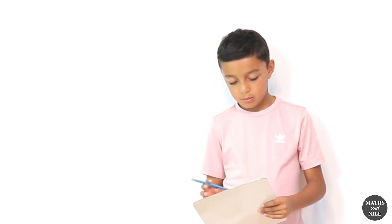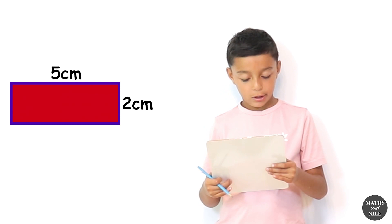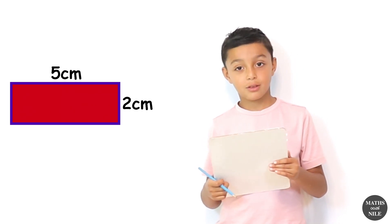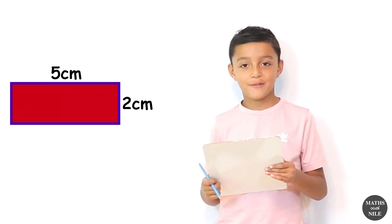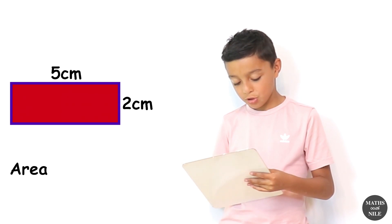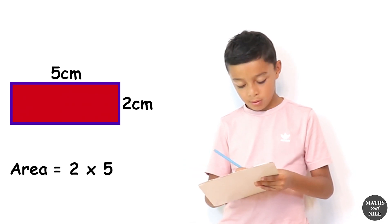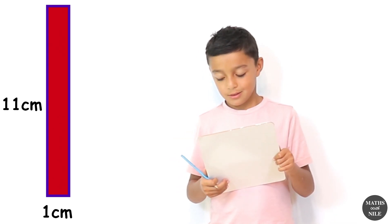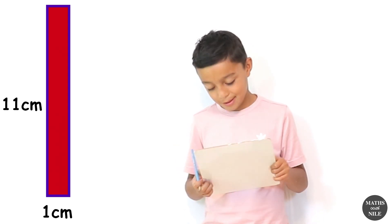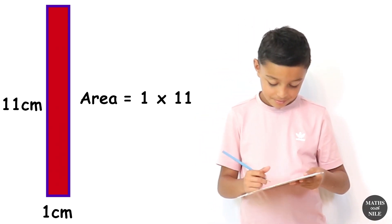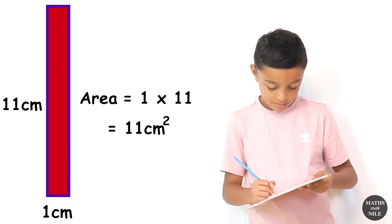Let's go on to number six. It is 2 centimetres by 5 centimetres. The 2 centimetres is the width and the 5 centimetres is the length. So we just do two times five, which is ten centimetres squared. Number seven: it is 1 centimetre, which is the width, times 11 centimetres, which is the length. So one times eleven equals eleven — the area is eleven centimetres squared.